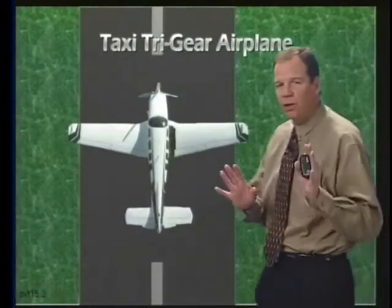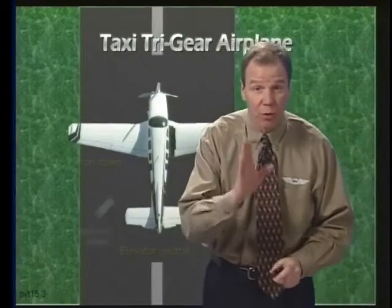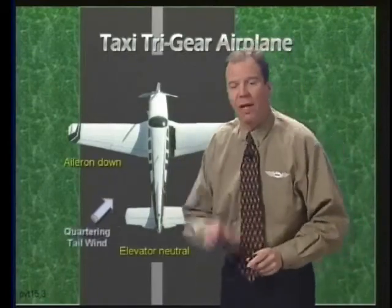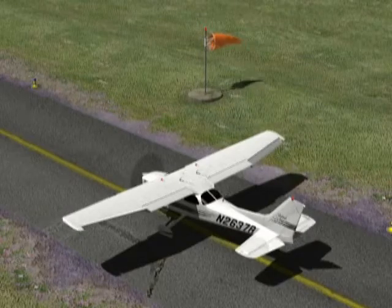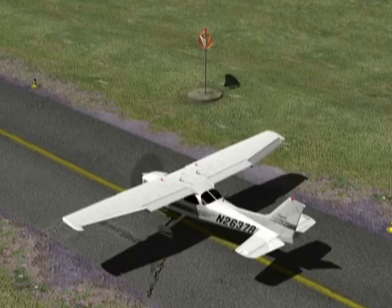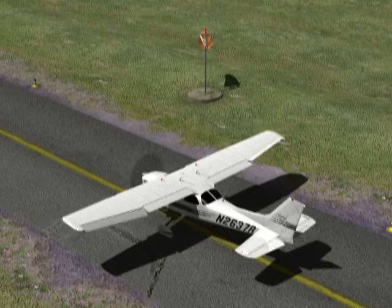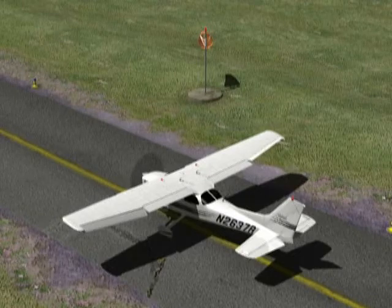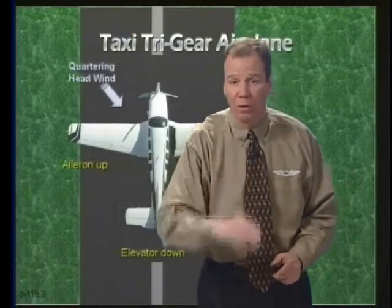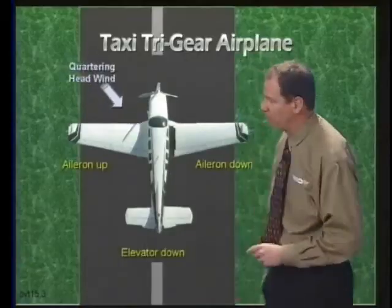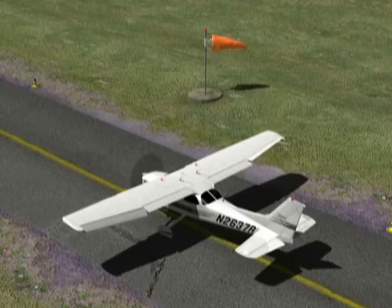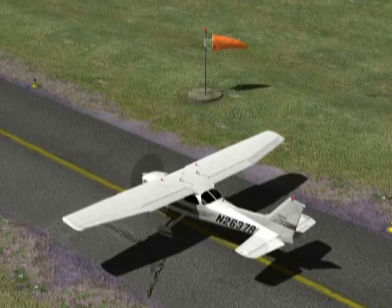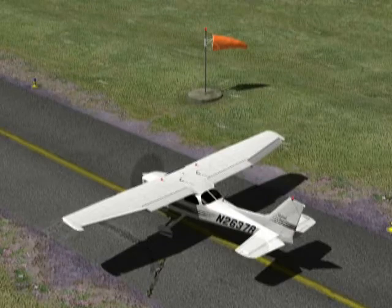Let's begin with taxiing. When taxiing a tricycle gear airplane with a strong quartering tailwind, make sure you keep the elevator in the neutral position and the upwind aileron in the down position. Now, for that same tricycle gear airplane with a strong quartering headwind, keep the elevator down and keep the upwind, or into-the-wind, aileron in the up position.